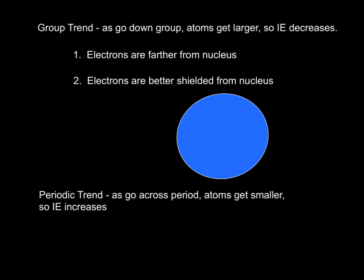The group trend - as you go down a group, remember atoms get bigger, therefore their ionization energy decreases. These electrons are farther from the nucleus, and we're going to say that they're better shielded from the nucleus, so they're easier to remove.